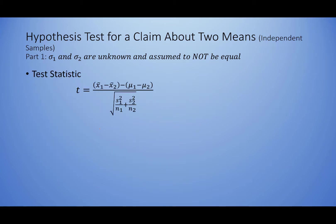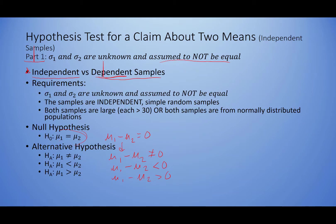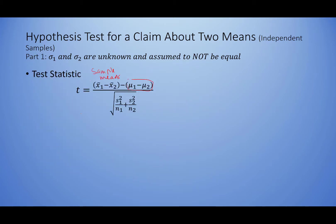Once we have our requirements checked off, the type of test, and our null and alternative hypotheses, we move to the test statistic. In the formula, the x-bars stand for the sample means — subscript one for the first sample, two for the second. The term μ₁ minus μ₂ in the numerator: since we assume the means are equal under the null hypothesis, μ₁ minus μ₂ equals zero, so this portion of the test statistic is typically going to be zero.